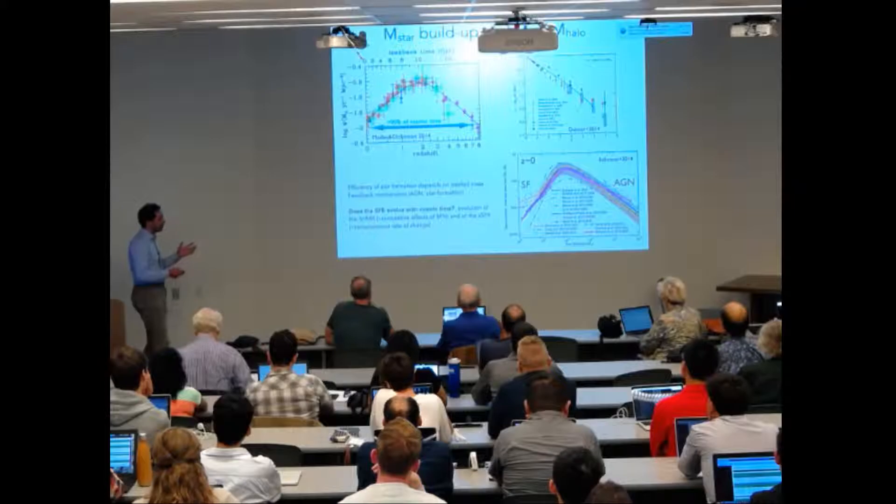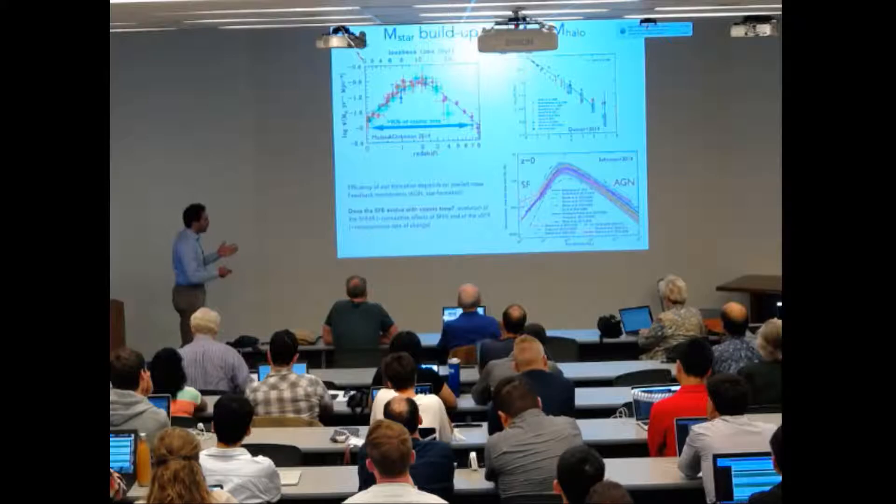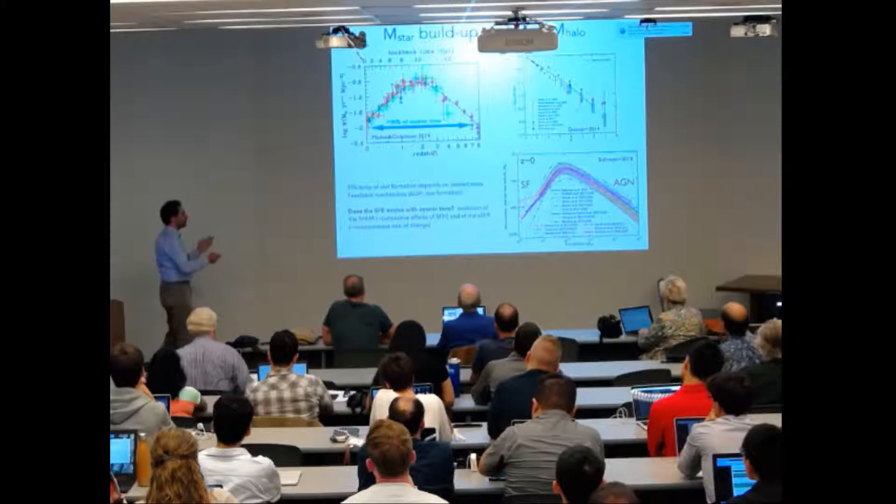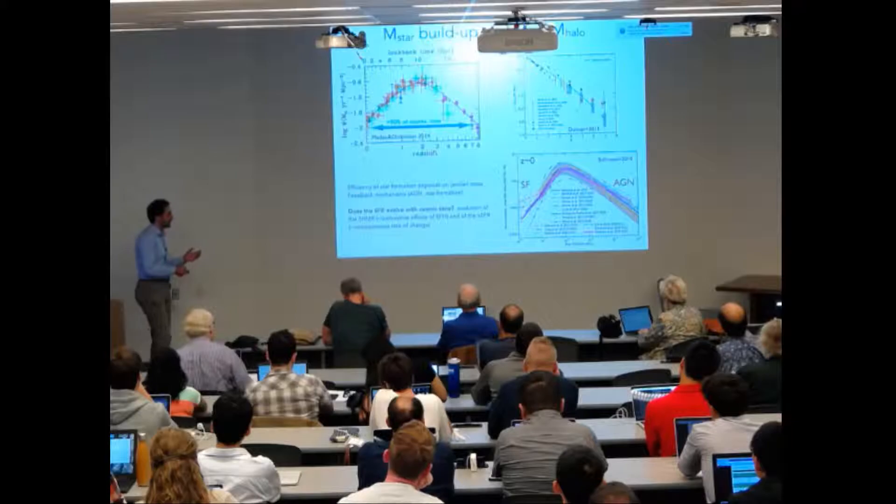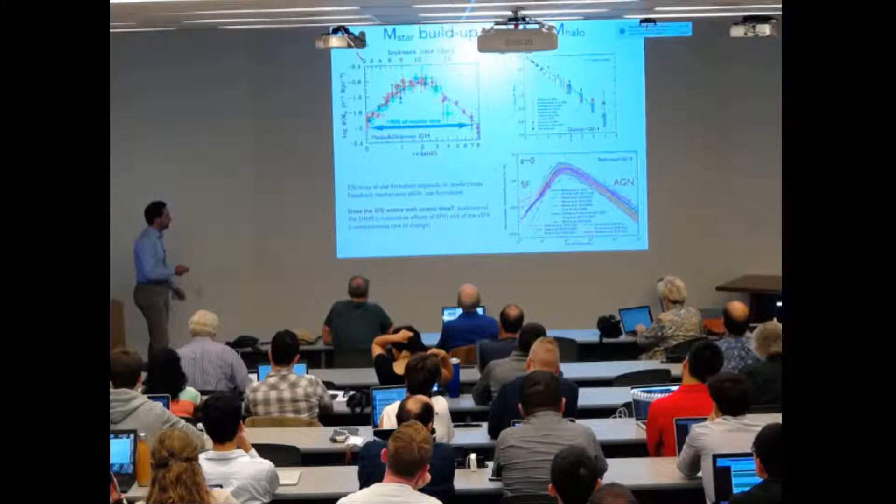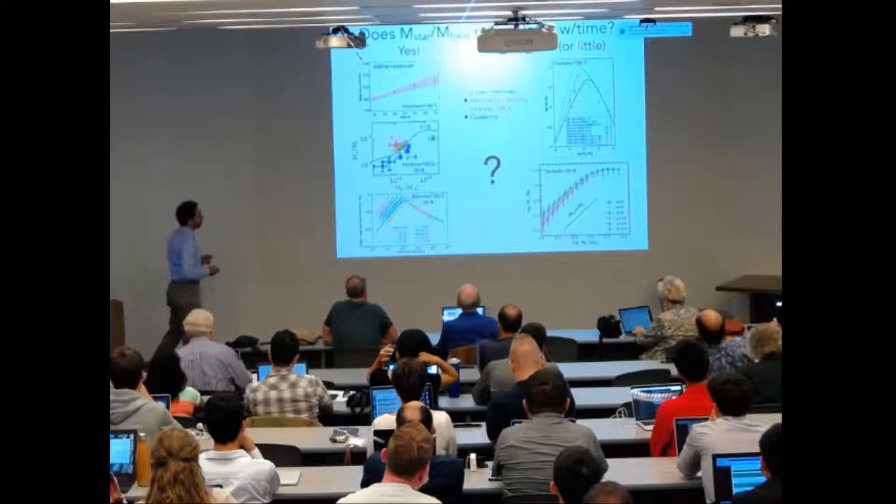efficiently baryonic mass is converted into stars compared to the hierarchical growth of dark matter halos. This is usually expressed with the stellar-to-halo mass ratio. We know that at intermediate and low redshift there is a dependence of star formation efficiency on stellar mass due to different feedback mechanisms.